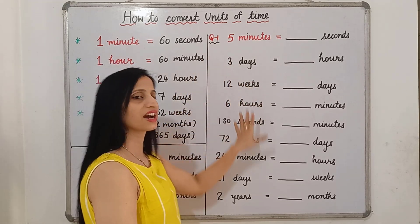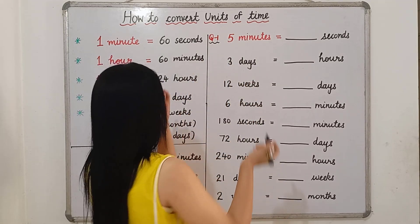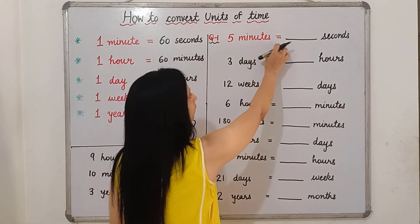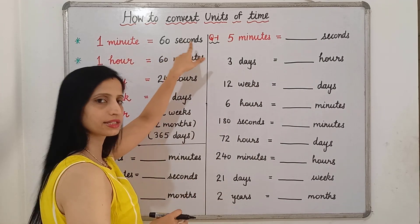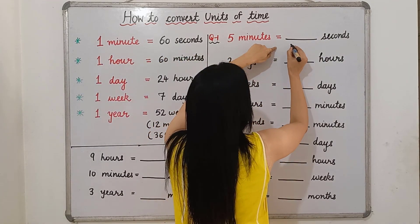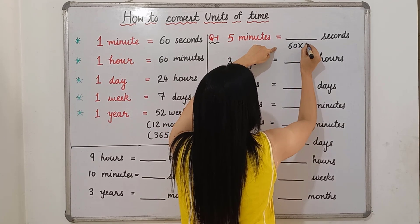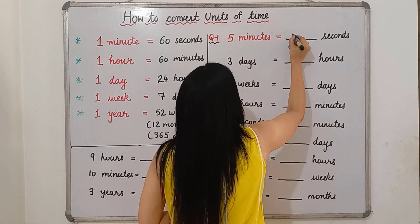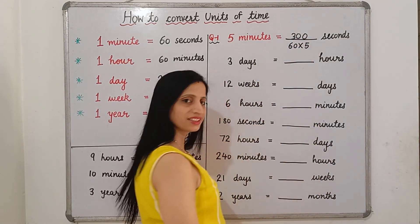So now let's convert these — it's very easy. 5 minutes is equal to how many seconds? We know that in 1 minute there are 60 seconds, so in 5 minutes it will be 60 multiplied by 5. The answer will be 300 seconds.